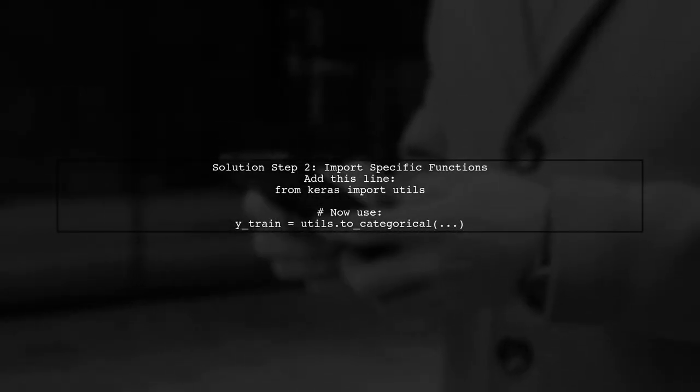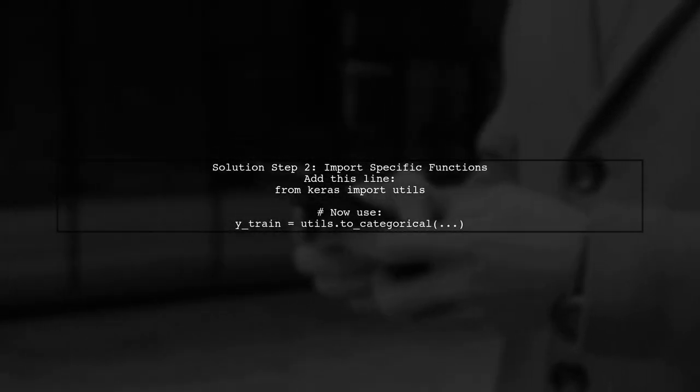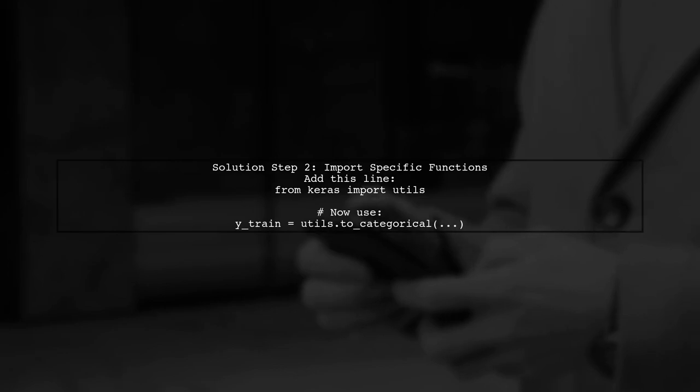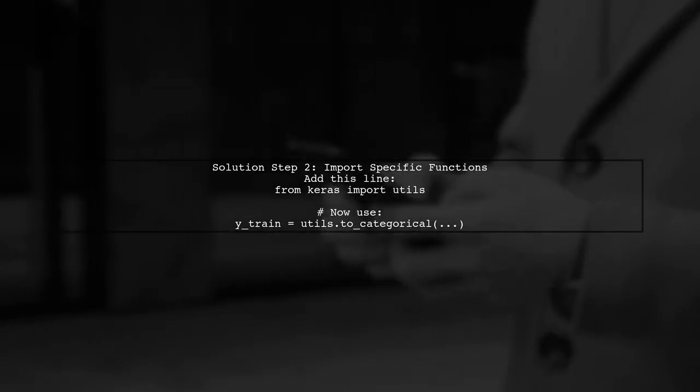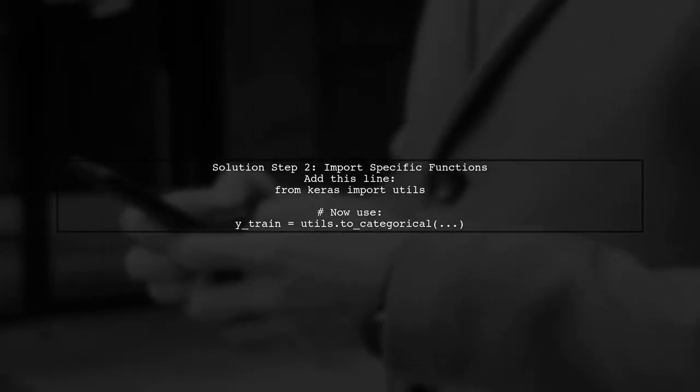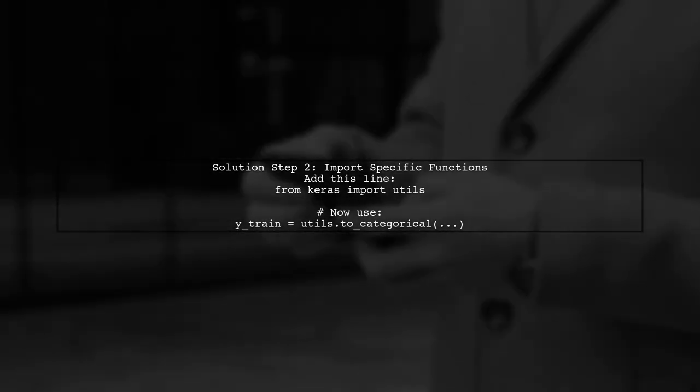Alternatively, you can import the specific functions you need from Keras. For example, you can import utils directly to access to_categorical.